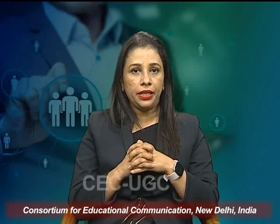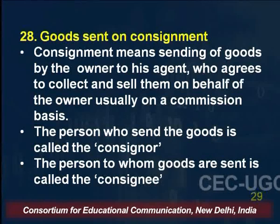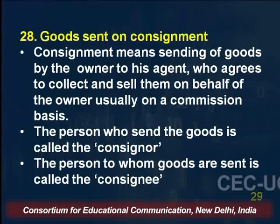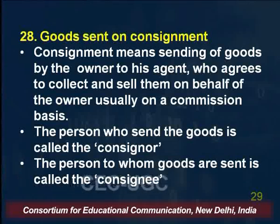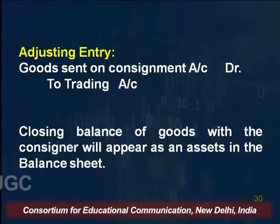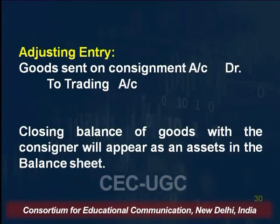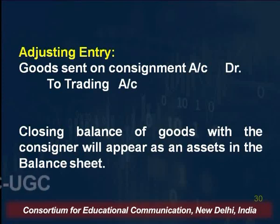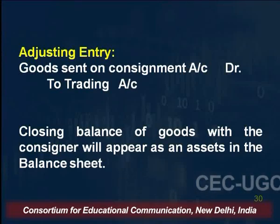The next adjustment entry is regarding goods sent on consignment. Consignment means sending of goods by the owner to his agent who agrees to collect and sell them on behalf of the owner, usually on a commission basis. There are two parties: the consignor, who sends the goods, and the consignee, to whom goods are sent. The adjustment entry is: Goods Sent on Consignment Account debit to Trading Account. Closing balances of goods with the consignee will appear as an asset in the balance sheet.